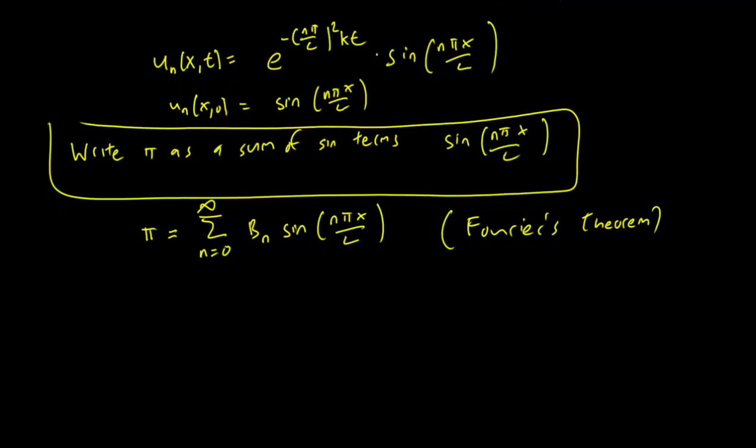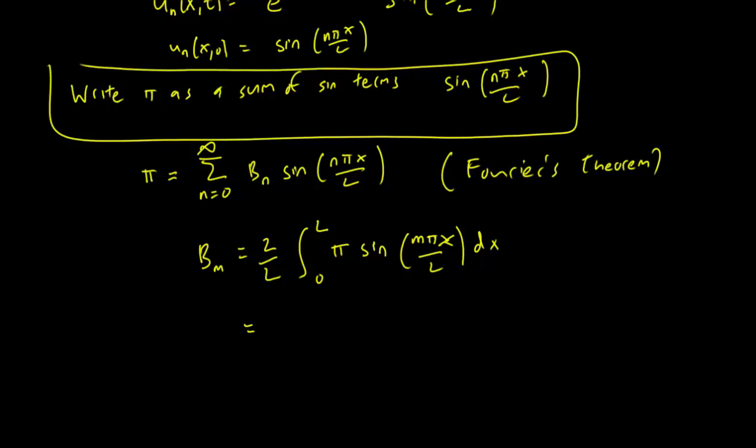And from the Fourier's theorem video we know that we just have to find b_m is equal to 2 over L times the integral of pi sin(n pi x over L) dx. This isn't a difficult calculation to do. So 2 over L pi, I can pull the pi out there because it's constant. And the integral of sin(n pi L x) is going to be minus cosine(m pi L x) times L over m pi going from x equals 0 to x equals L, because those were our boundary conditions for the original integral.